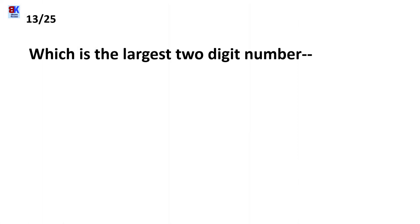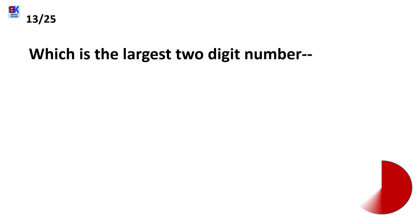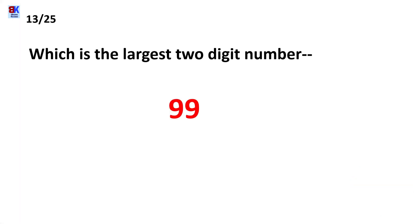Thirteenth question is: which is the largest 2-digit number? And the answer is 99. The next number after 99 is 100, which is a 3-digit number, so the largest 2-digit number would be 99.